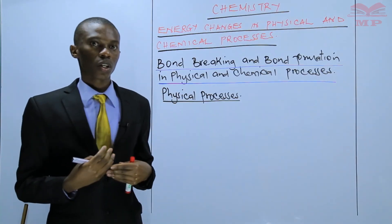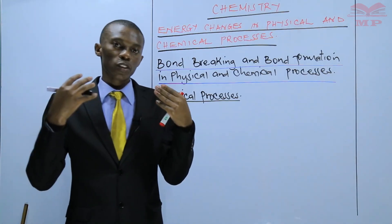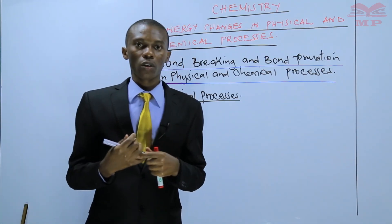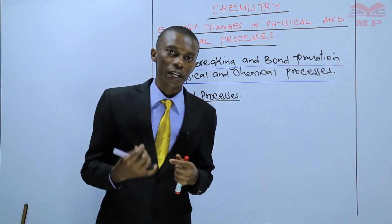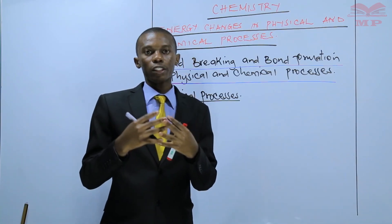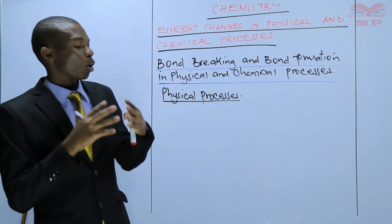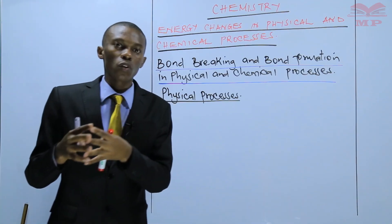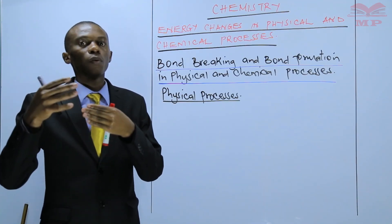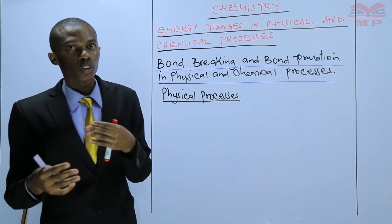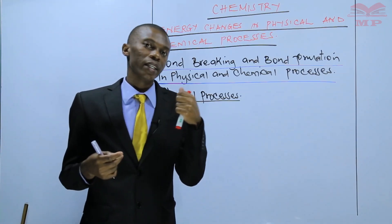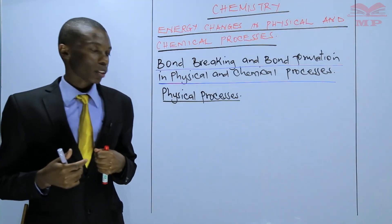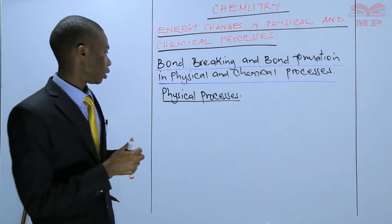Then in the exothermic reaction, when we mixed sodium hydroxide with water, we got a solution of sodium hydroxide. This shows that bonds were broken and new ones formed so that you can form sodium hydroxide solution in exothermic reactions and ammonium nitrate solution in endothermic reactions. Let me show you in the form of equations.